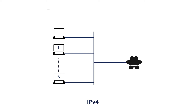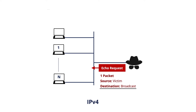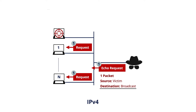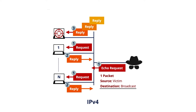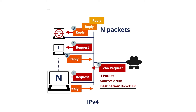In IPv4, an attacker sends an echo request to the IPv4 broadcast address with the victim's IP as the source address. This address is the target of the attack. This echo request will reach all hosts in the same link. All hosts in the link will answer with an echo reply message destined to the victim's IP address. If there are n hosts on the link, n packets will reach the victim.